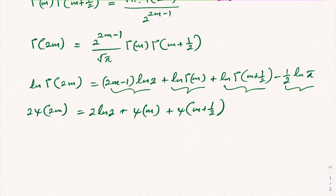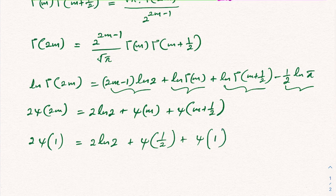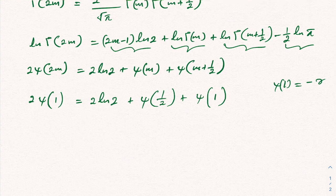Now let's plug in m equals one half. The left side gives 2 times psi(1). On the right side we get 2 times natural log of 2, plus psi(1/2), plus psi(1/2 + 1/2), which is psi(1). In a previous video on the digamma function series, we proved that psi(1) equals negative gamma, where gamma is the Euler–Mascheroni constant.